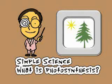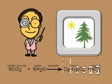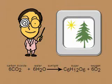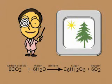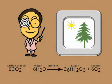Simple science. What is photosynthesis? Photosynthesis is the way plants use sunlight to turn carbon dioxide and water into sugar and oxygen.